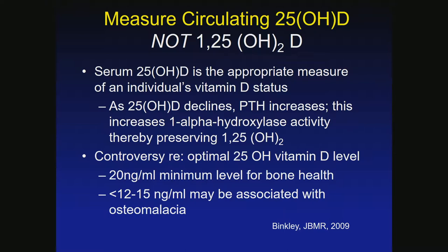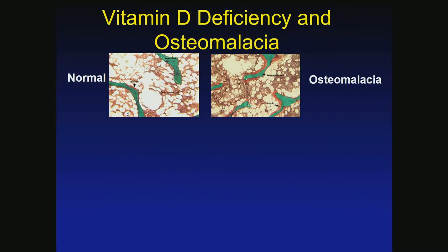There are ongoing debates about what is a normal vitamin D level. We believe above 30 ng/mL is clearly normal and less than 20 is too low. There's a gray area between 20 and 30. I think most endocrinologists push for 30. We know that if it's less than 20, it's vitamin D deficiency, and lower than that we often think of osteomalacia.